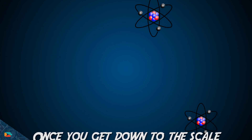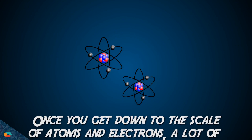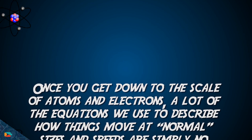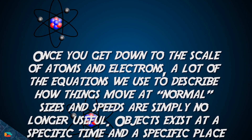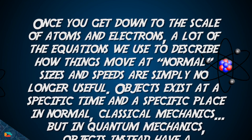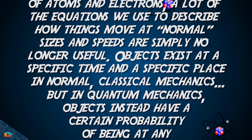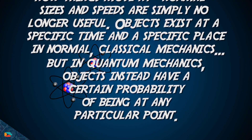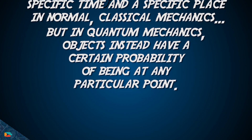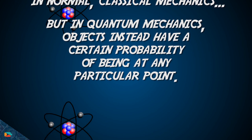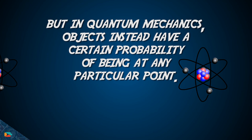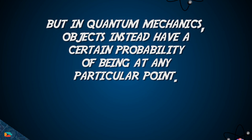Once you get down to the scale of atoms and electrons, a lot of the equations we use to describe things at normal sizes and speeds are simply no longer useful. Objects exist at a specific time in a specific place in classical mechanics, but in quantum mechanics objects instead have a certain probability of being at any particular point. Scientists are far from agreeing on which interpretation of quantum mechanics is correct.